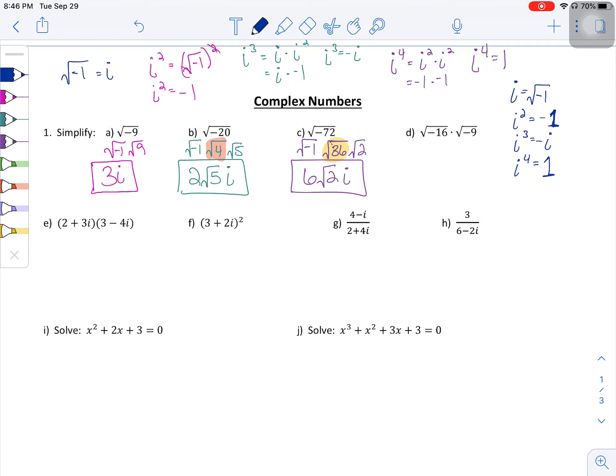Now, part D, oftentimes students will get confused with this one because they say, oh, we can multiply negative 16 times negative 9. Yes and no. What you want to do first is actually simplify each of the roots first and then multiply. So think of these like parentheses. You want to do what's inside the parentheses first. So the square root of negative 16 is 4i. The square root of negative 9 is 3i.